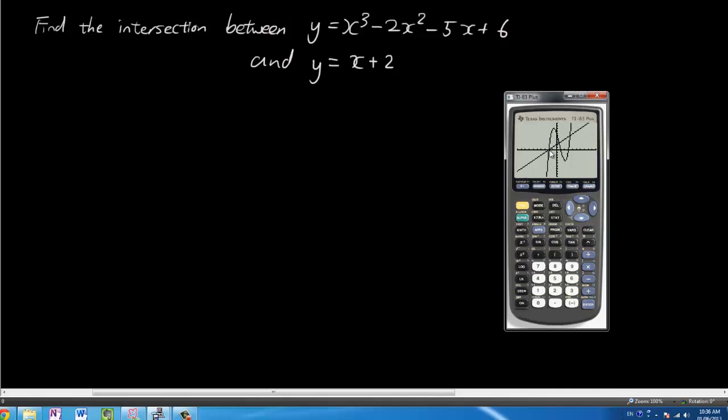Now we're going to see where they intersect. So you're going to press the second function key, and then press the trace button which will give you calc. So click that, and then go to number 5 which is intersect. And now by pressing the left and the right button, you're going to go to approximately where the first point of intersection is. And you're going to press enter.